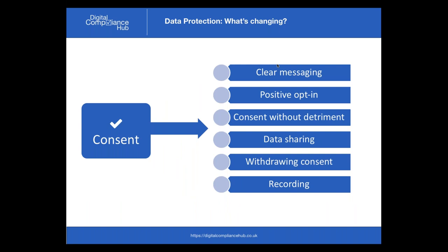The GDPR consent rules require that messaging is clear and open — you need to be clear about who you are, what you're collecting the data for, and what it will be used for. The data subject must take a positive action to opt in. In a marketing environment this means we won't be able to use pre-ticked marketing boxes or confusingly worded phrases hoping someone doesn't spot they should untick a box — those won't be allowed anymore. It must be a very clear and positive opt-in by the data subject.